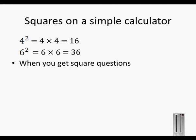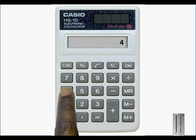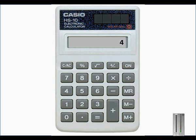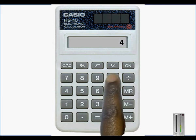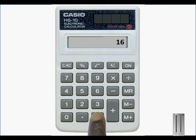So when you get square questions, you type in the number times itself. For instance, 4 times 4 equals 16.